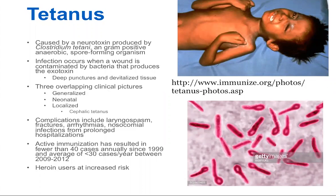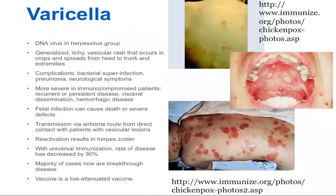Because we have such a good immunization system, there are fewer than 40 cases now reported in a year — usually less than 30. Most of the time these are in people who are not vaccinated or who have let their immunity wane by not getting their booster shots. Interestingly, heroin users are at increased risk because quinine is used to dilute the heroin, and the bacteria appears to favor quinine.